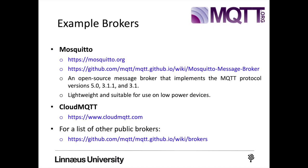There are multiple brokers — some proprietary, some open source, and some cloud-based. One very common broker is Mosquitto, an open source message broker that implements MQTT protocol versions 5.0, 3.1.1, and 3.1. Mosquitto is lightweight and suitable for use on all devices from low-power single-board computers to full servers. There is also Cloud MQTT, which is highly used for IoT applications as it is hosted in the cloud.